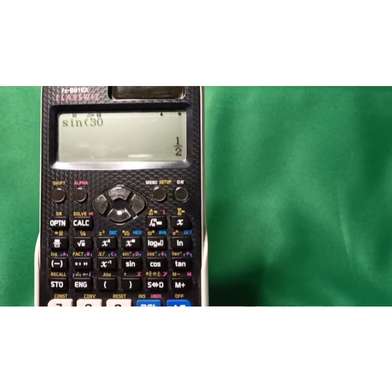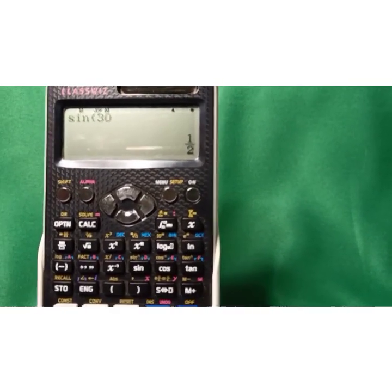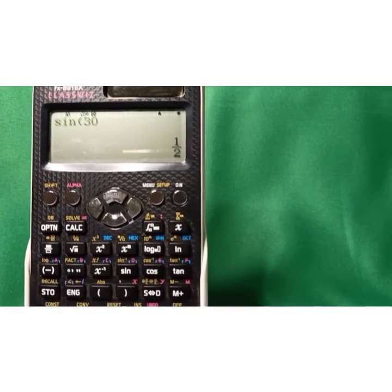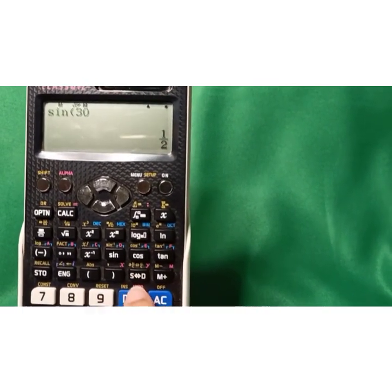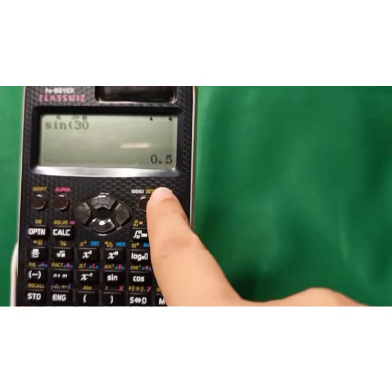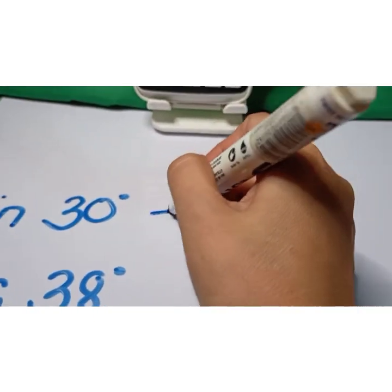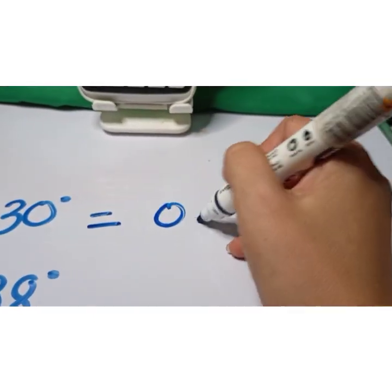We obtained one half. This is a special angle, and as we have discussed, the value of sine 30 is one half. If the learning task requires decimal values, go to the S to D function and press it. By pressing S to D, we get 0.5. Therefore, the value of sine 30 degrees is equivalent to 0.5.